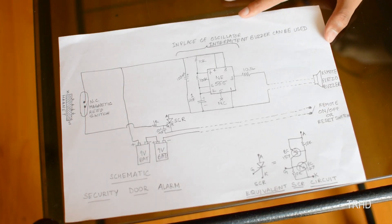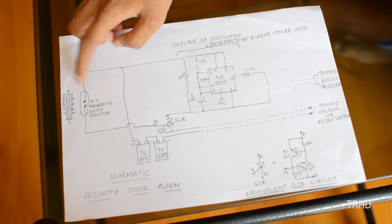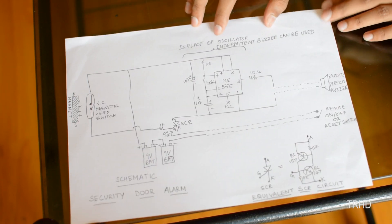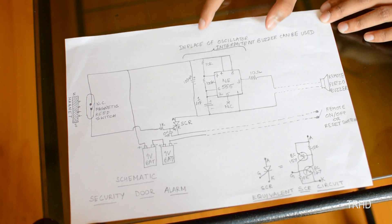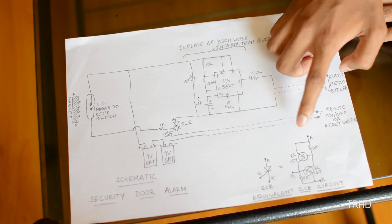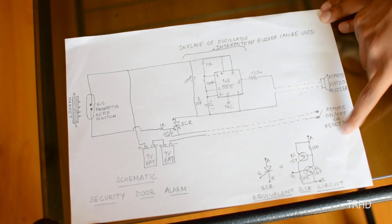This is the schematic of the security alarm. You can see here, this is the reed switch and this is the magnet. Here is the SCR. This is the oscillator circuit that I have connected to the buzzer. If you don't want to make this oscillator circuit, you can just get an intermediate buzzer which has an inbuilt oscillator. In place of an SCR, you can make an equivalent circuit using two transistors. I have shown here clearly. Just have a look.